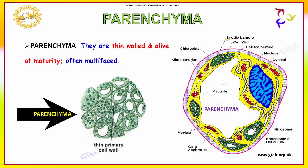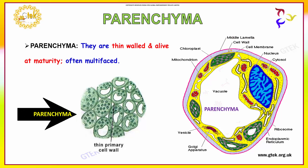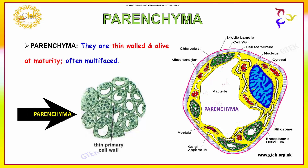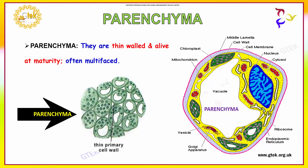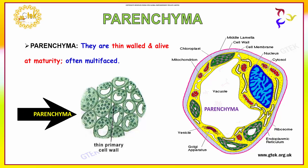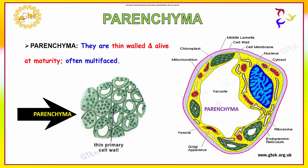Below the middle lamella, it has a cell wall and cell membrane. This is the nucleus. The cytosol is represented in yellow color. This is called the Golgi apparatus. This white portion is called endoplasmic reticulum, and this dotted portion is called ribosomes.